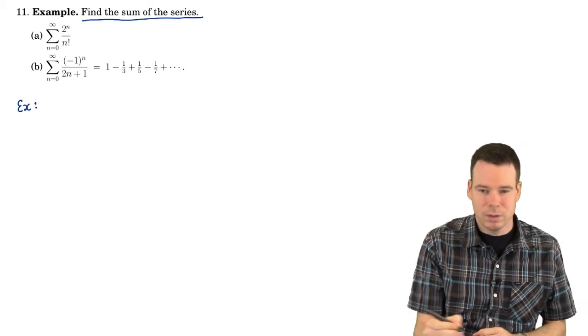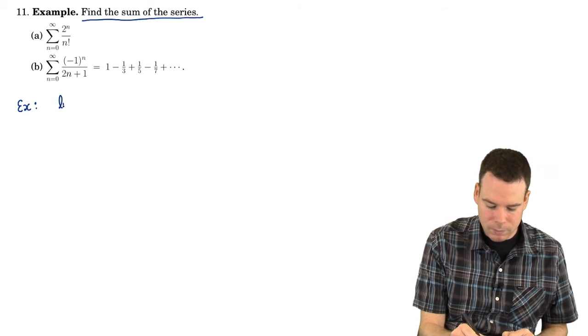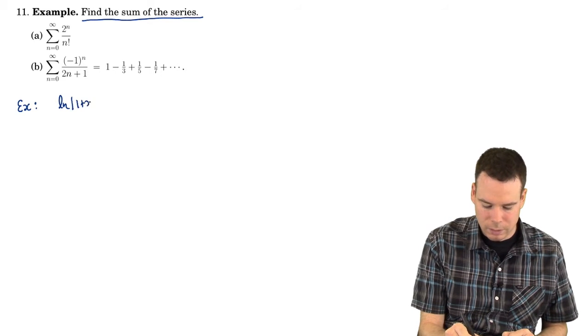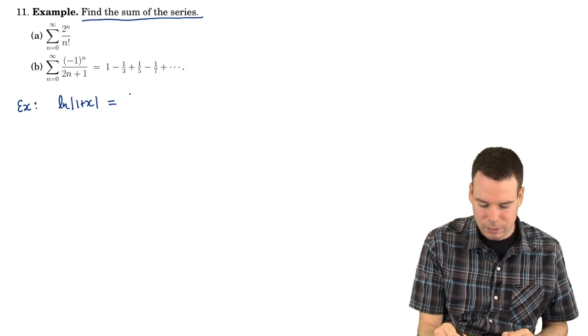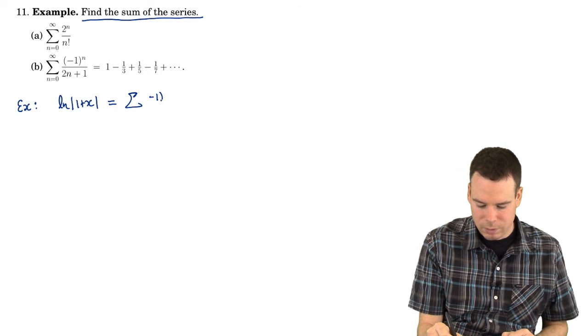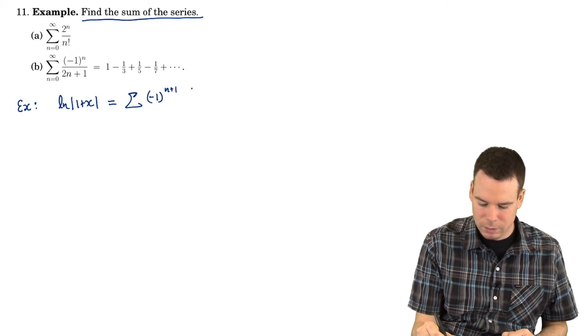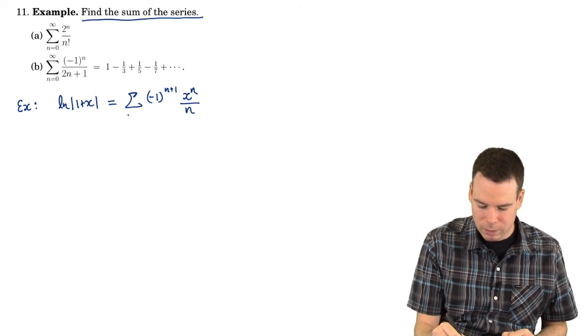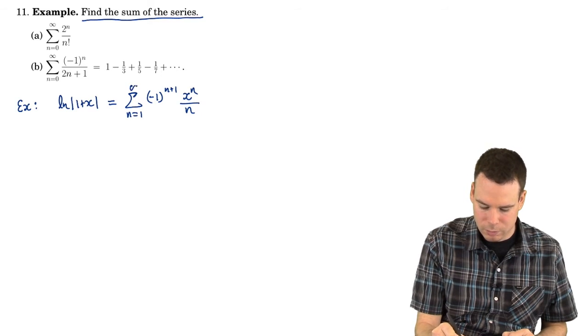Before we work on these ones, let me just look at a quick example. So we saw before that the logarithm of 1 plus x is the sum, negative 1 to the n plus 1, x to the n over n as n goes from 1 to infinity.